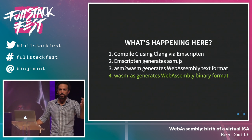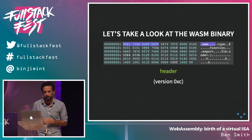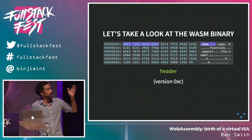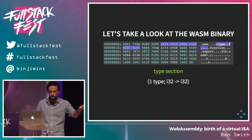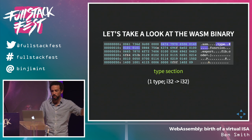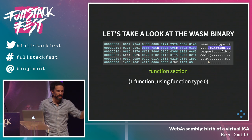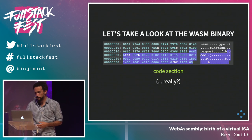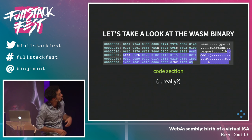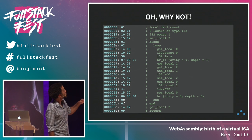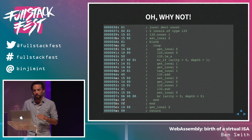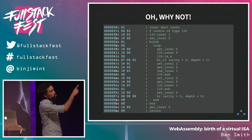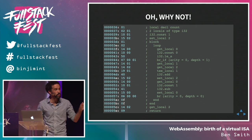Now we have our text format — what's the next step? We generate the binary format, which is what the engines actually load. We have the header, a type section representing function signatures, a function section specifying one function with that type, the exports section, and the code section. It's a very small amount of code — very fast to parse as well.